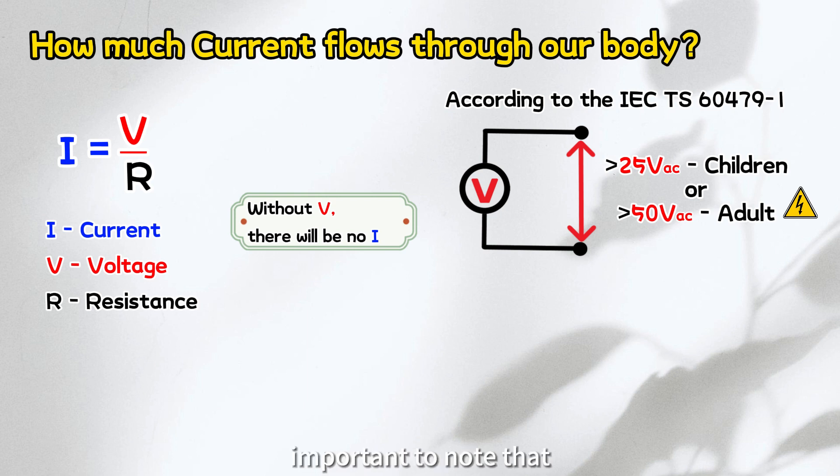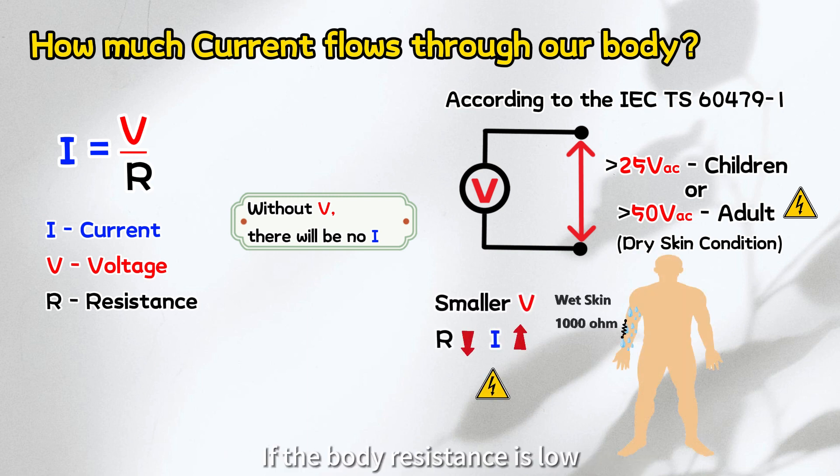However, it's important to note that voltages lower than these values mentioned are not completely safe to touch. These guidelines typically refer to electric shock scenarios with dry skin conditions where the resistance is considerably high. If the body resistance is low, such as in the case of wet or injured skin, even a small voltage may result in a lethal amount of current.